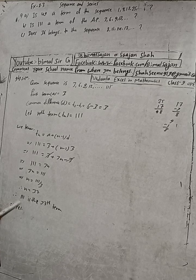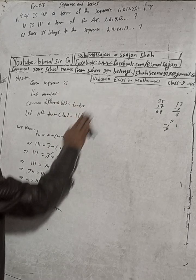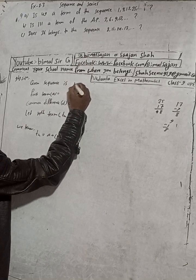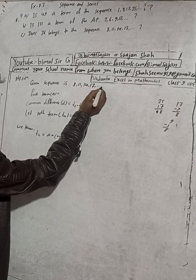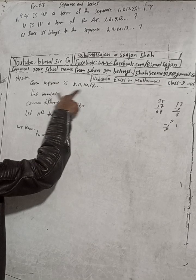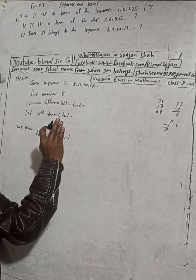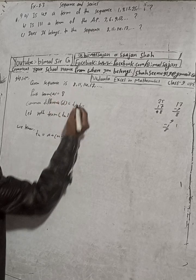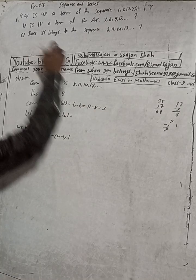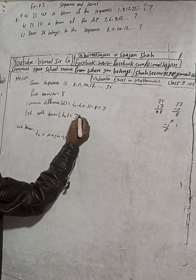Now the third part. The given sequence is 8, 11, 14, 17, dot dot dot. Does 36 belong to this sequence? The first term is 8 and the common difference is: 17 minus 14 = 3, 14 minus 11 = 3, 11 minus 8 = 3. So d = 3.